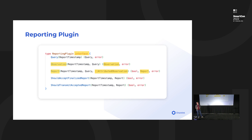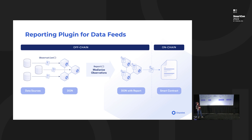To make this concrete, here are two examples of how we can implement the observation and report methods to cover completely different use cases with the same framework. For the data feed example, the observation function fetches a price from data sources, and the report function takes those observations, medianizes them, and generates a report. This should look very familiar to the OCR 1 architecture, but now modularized as components.